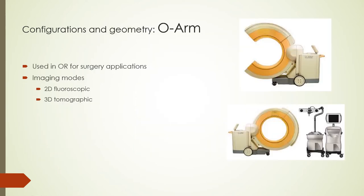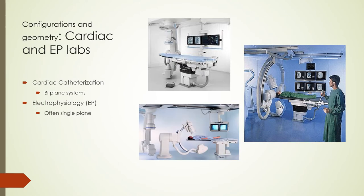Another type of configuration is the O-arm imaging system, used in operating rooms for guiding surgery applications like screw placements. The system is capable of imaging in 2D mode as a fluoroscope or in 3D mode to produce tomographic images. In 2D mode, doses are comparable to other fluoroscopy applications. The O-arm is shown opened to act as a C-arm or closed for 3D acquisitions. Dual tube and dual image intensifier systems are found in cardiovascular and interventional radiology suites, capable of rotation to create tomographic images like CT for navigation and guidance. The images show two biplane units for catheterization and a single plane for electrophysiology.